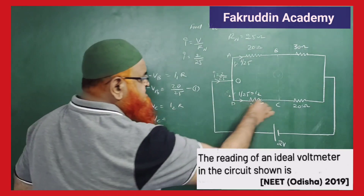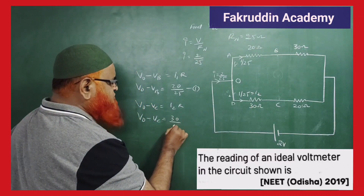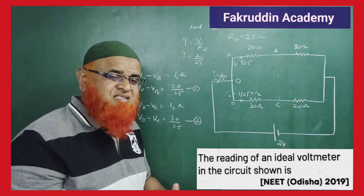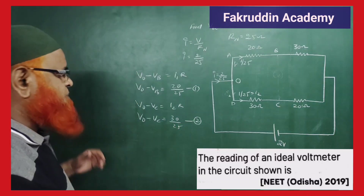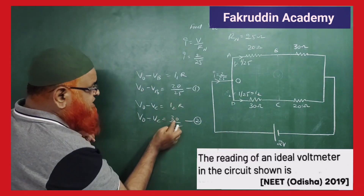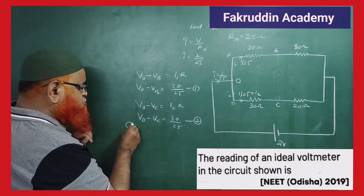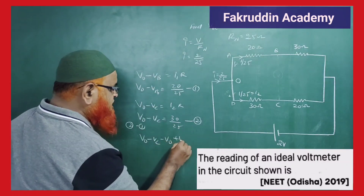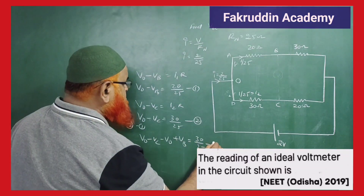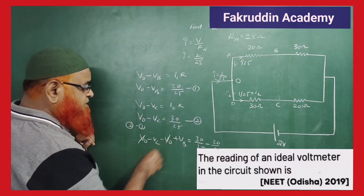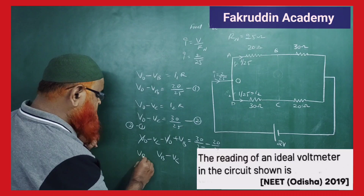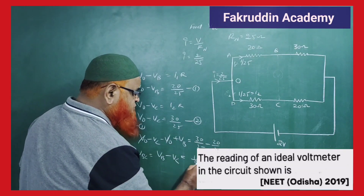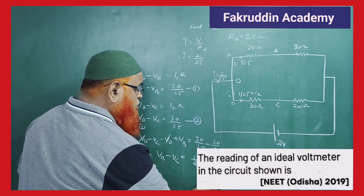Using these two equations directly, we subtract equation 1 from equation 2. V0 minus VC minus V0 plus VB equals 30/25 minus 20/25. The V0 terms cancel, leaving VB minus VC, which is the voltage across BC. That equals 30 minus 20 over 25, which is 10/25, equal to 0.4 volts.